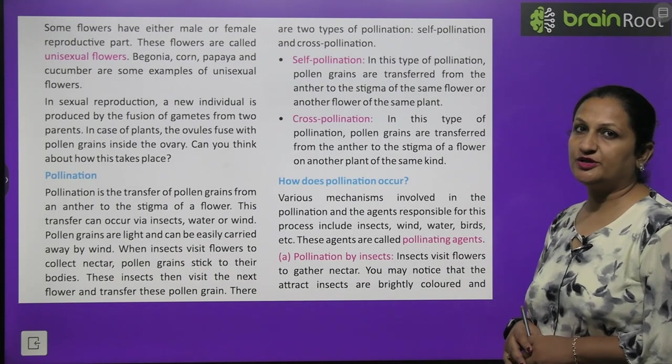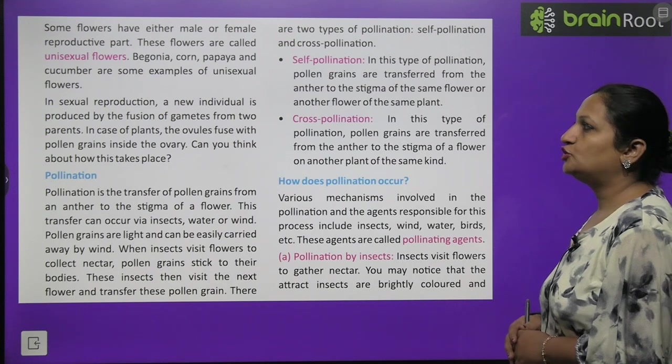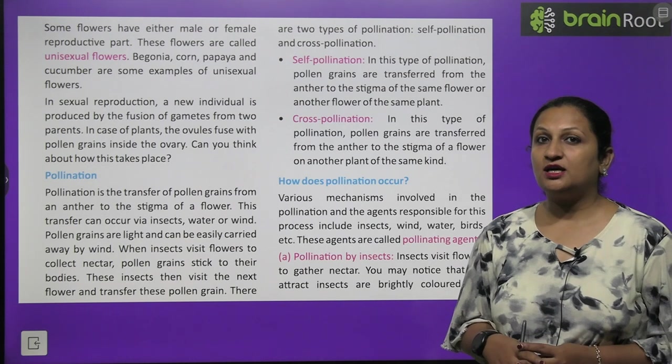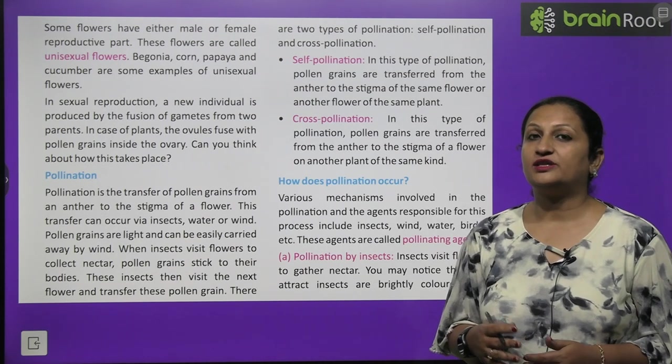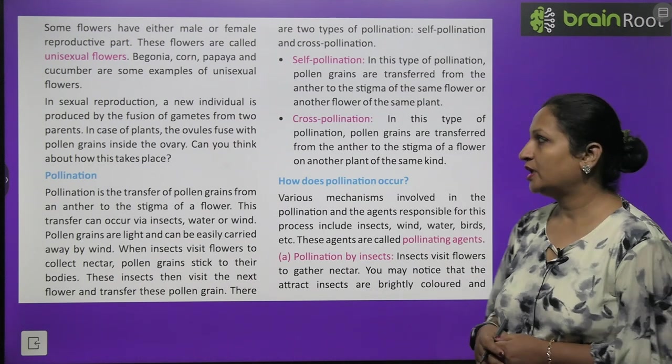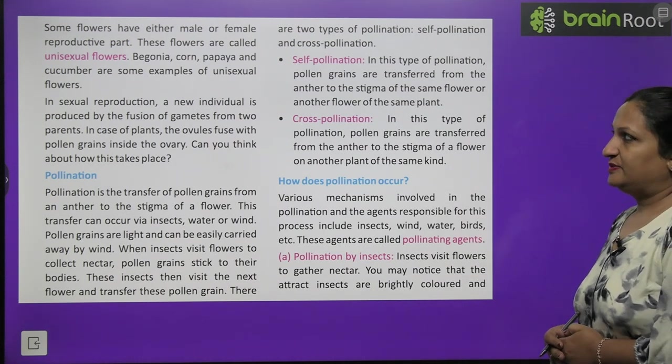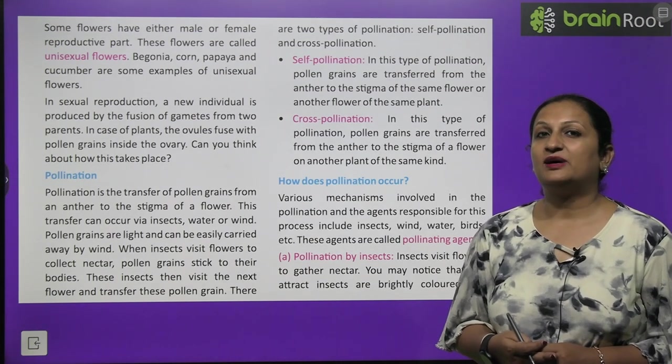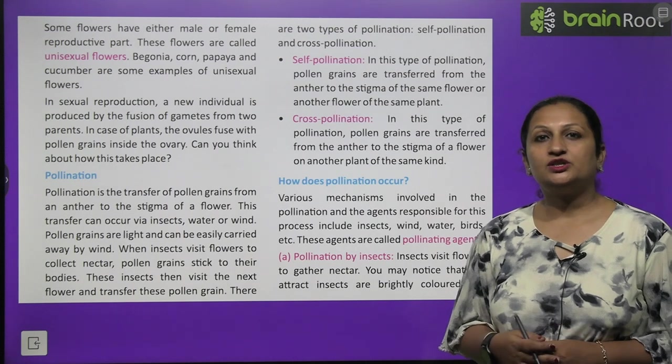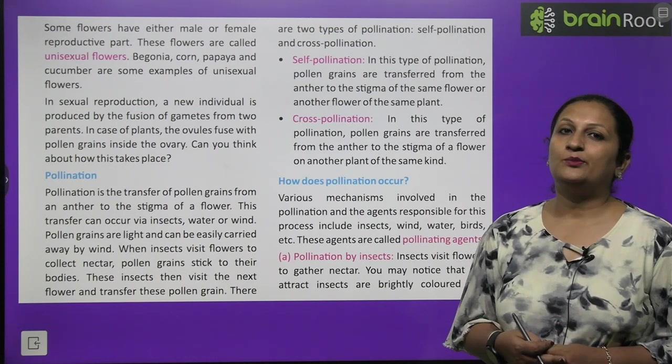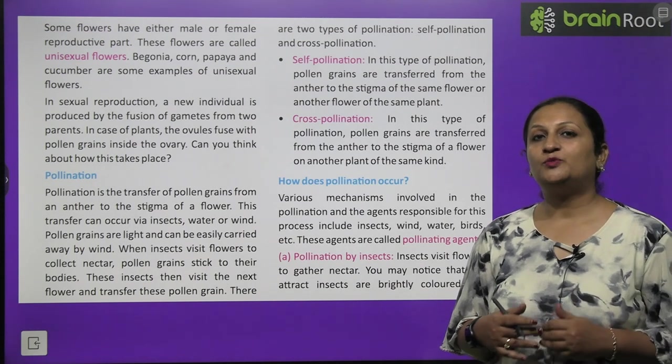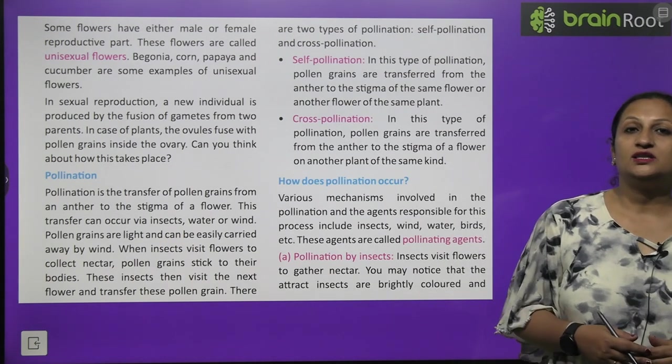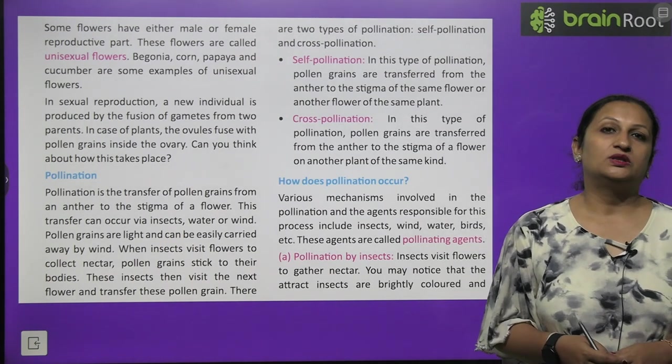In sexual reproduction, new individual is produced by the fusion of gametes from two parents. The fusion of two gametes is very necessary. Only then zygote will form, which will further develop to form embryo or show further development. Can you think of how it takes place? How will the male gamete reach to the female gamete? It is done by the process called as pollination. What is pollination children? The male gamete in plants we call pollen grains. So transfer of pollen grains from one plant to the stigma of the other plant so that they can reach the ovary - this process we call pollination.